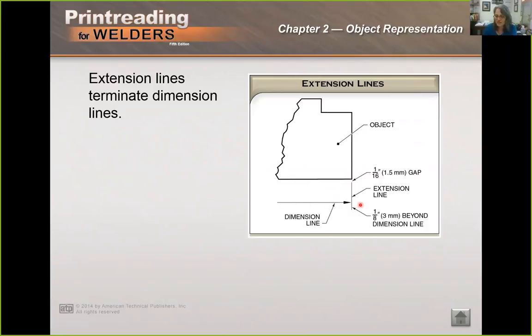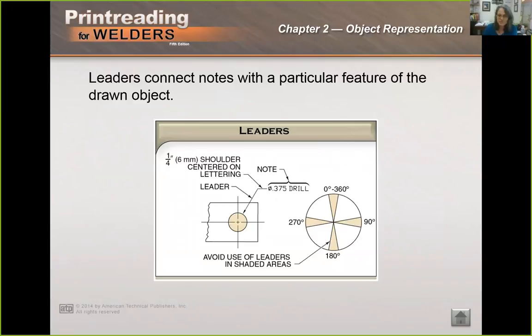Dimensions can show size or location. This dimension shows a size. It's a half inch hole we're drilling out. These dimensions show locations. They tell us that this hole is placed three quarters of an inch from the bottom. Extension lines will terminate dimension lines. So this is a dimension line. This line that connects to or is close to the edge of the object for dimensioning is called an extension line.